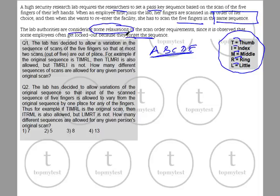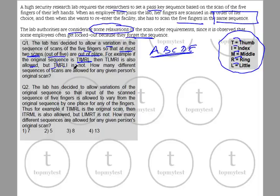The first question: the lab has decided to allow a variation in the sequence of scans of the five fingers so that at most two scans out of five are out of place. For example, if the original sequence is T M I R L, then T L M R I is also allowed — L and I have interchanged their places, but the other three are in sequence. However, T M R L I is not allowed because thumb is the only one in the right place; middle, ring, little, and index are all interchanged. So at most two are out of place.